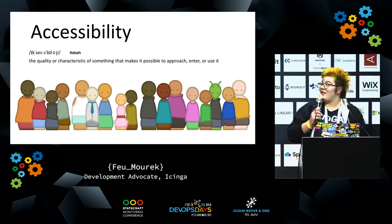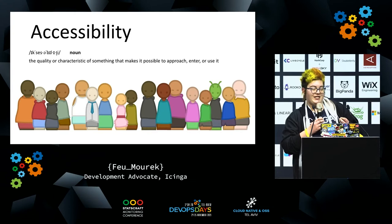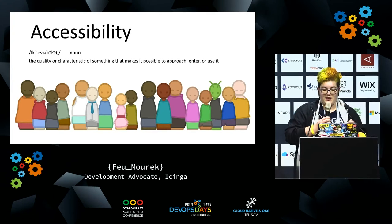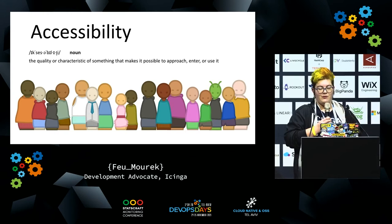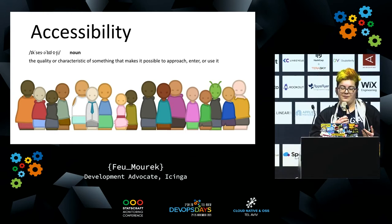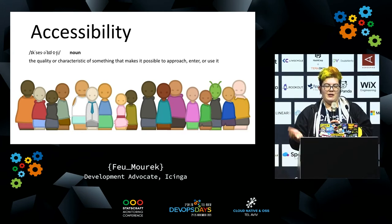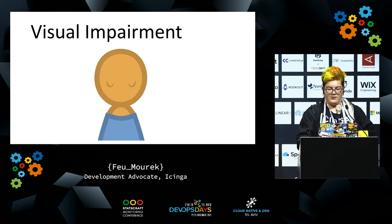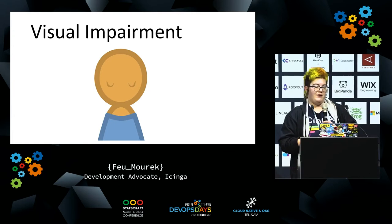Let's jump right into accessibility. The definition of accessibility, according to the Cambridge Business English Dictionary, is the quality or characteristic of something that makes it possible to approach, enter, or use it. So basically, being the in-between between the users and the thing they want to get into contact with. The main focus is going to be visual impairment for now, which includes color vision deficiencies and also the complete inability to interact with visual elements.